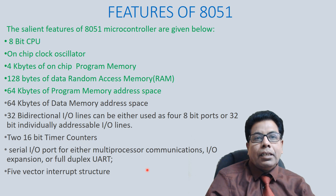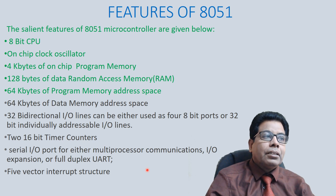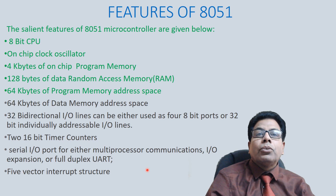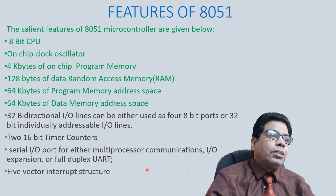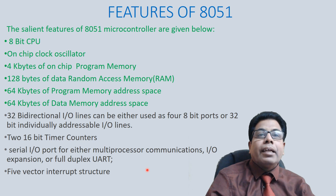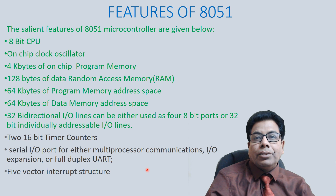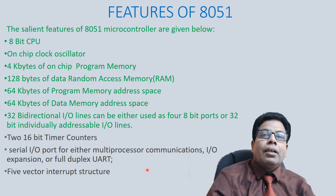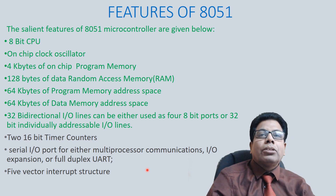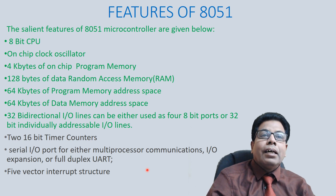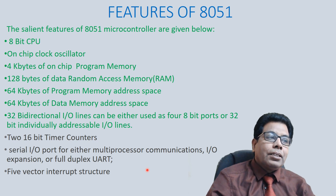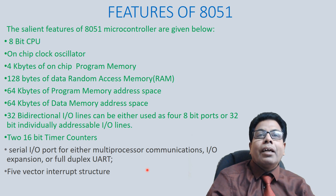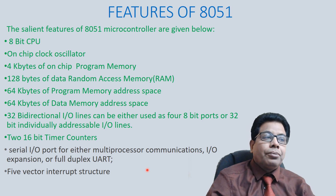It has 64 kilobytes of program memory address space, as it has a 16-bit address bus and can address 64 kilobytes of memory. Then 64 kilobytes of data memory address space. It also has 32 bi-directional I/O lines, which can be used as four 8-bit ports or as 32 individually addressable lines.